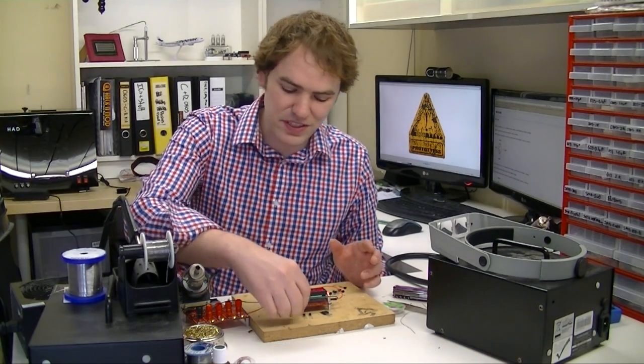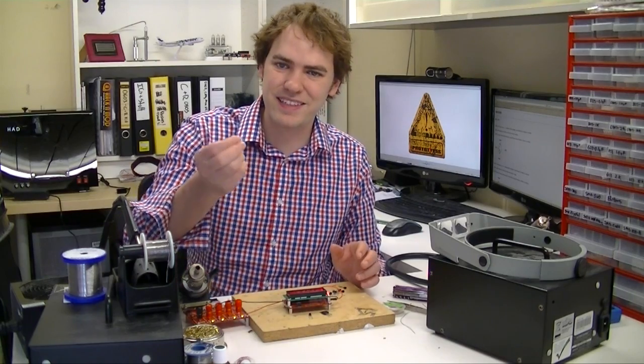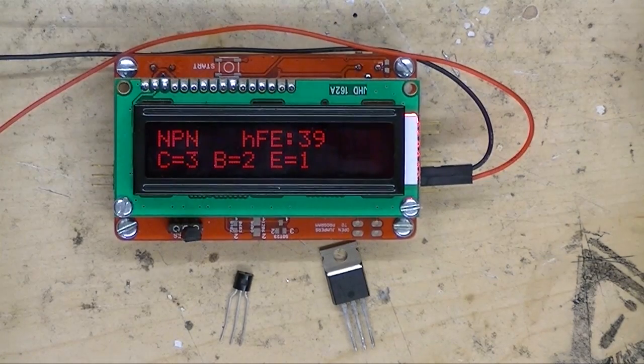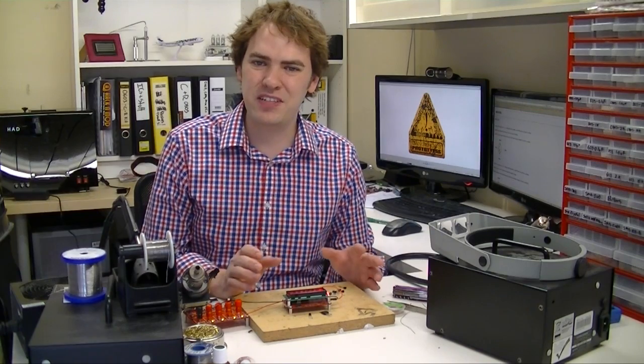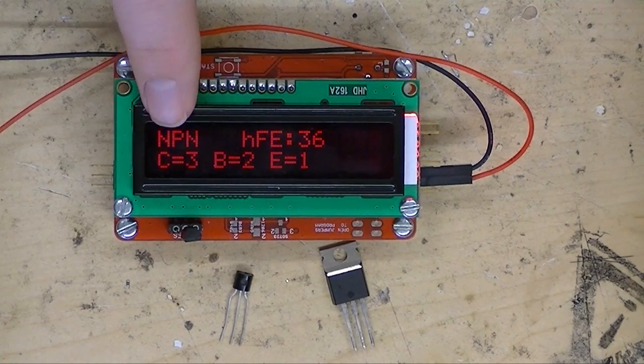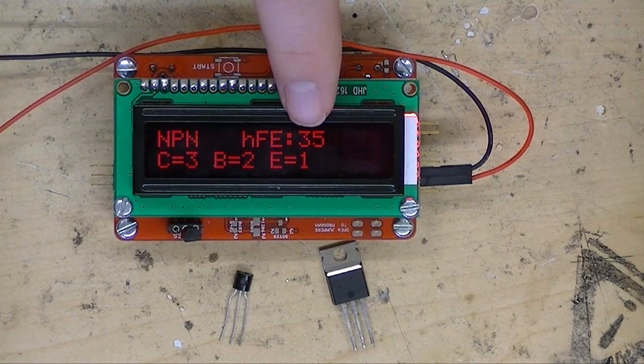So how does it work? Well, you just take your discrete component like this and you stick it in the tester. The tester does a series of tests to determine what the part is. In this case it's an NPN transistor with a gain of 36.